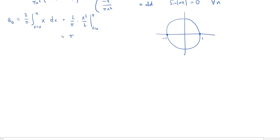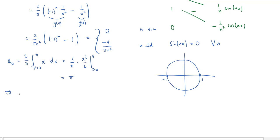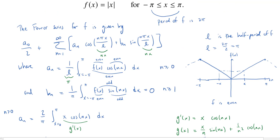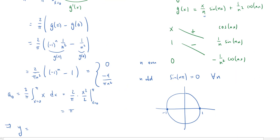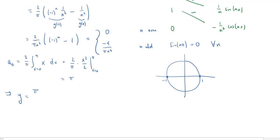And so now we can put everything together. So this implies that our y is equal to, so we start with a naught over 2. So a naught over 2. Our a naught is pi. So we get pi over 2 plus. And now we're going to have a sum. And we only want the odd n. Sum over n odd. And then our a sub n is going to be negative 4 over pi n squared cosine of nx. And that's our Fourier series.